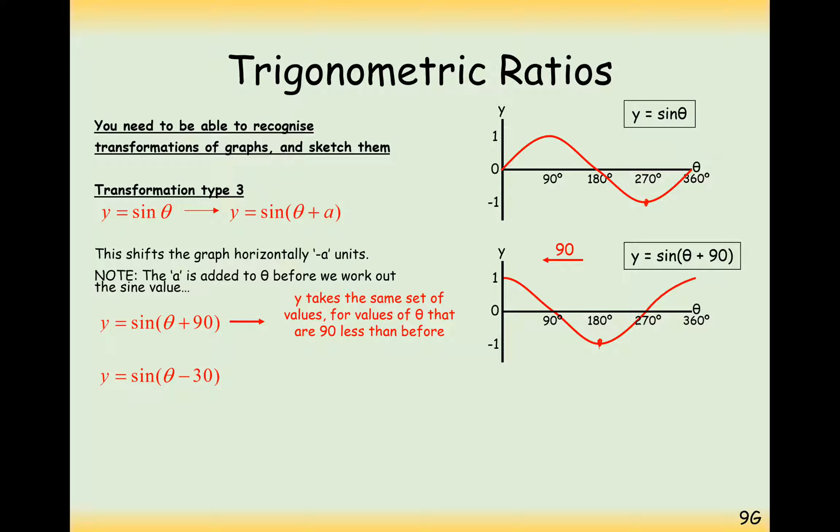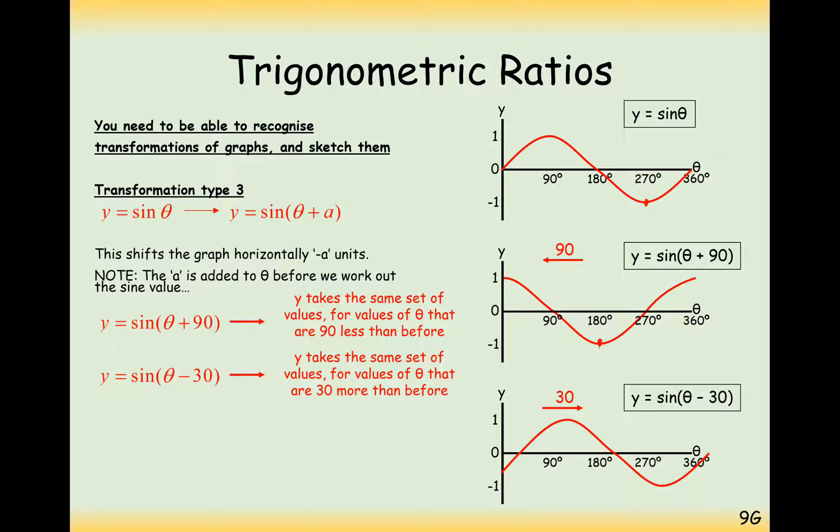And in this graph here, sine of theta minus 30. Now this is going to be moving it right by 30 degrees. So try your best to see how that would look. It's now going to intersect at 30 degrees. It's now going to come down and intersect at 210 degrees, etc., etc. So work with those intersection points and work with those peaks and troughs when you're transforming a graph.